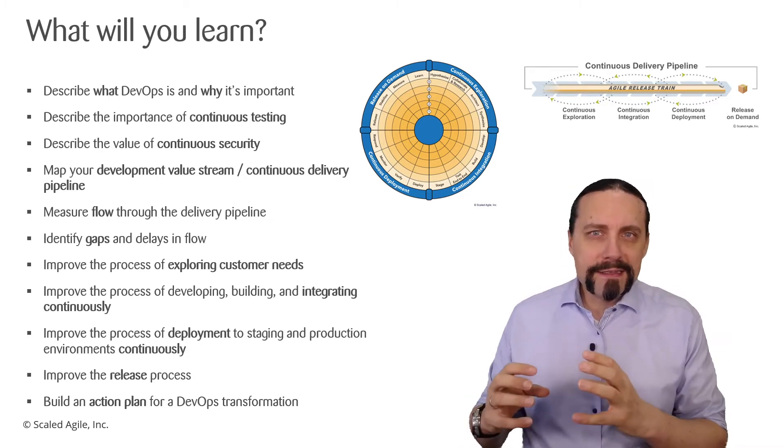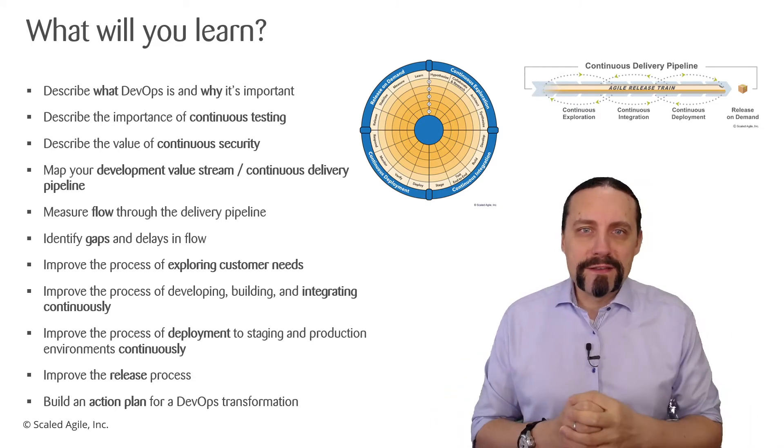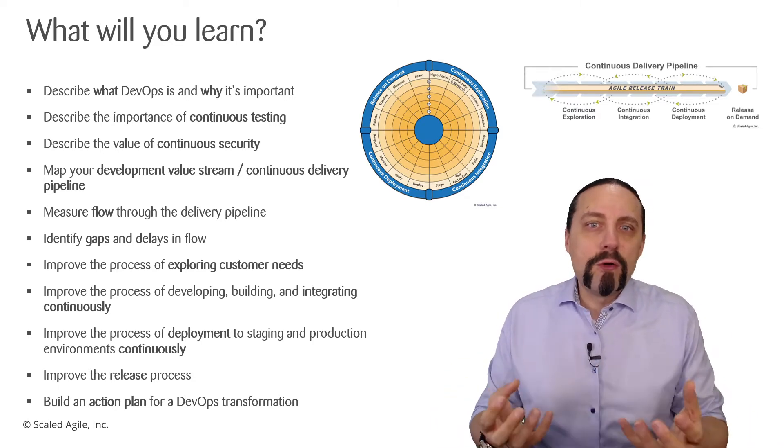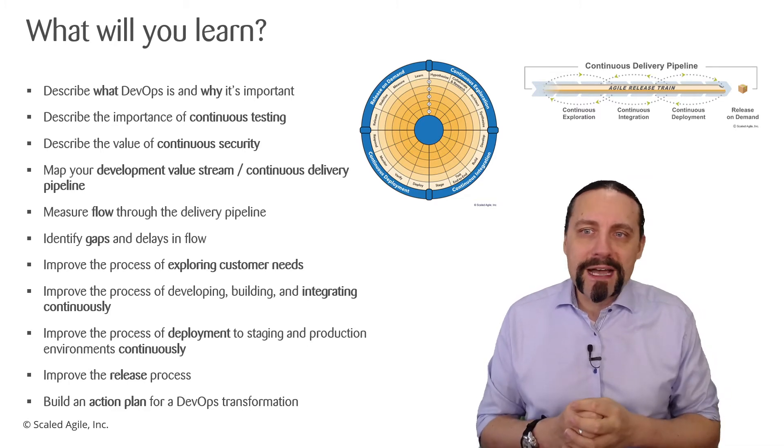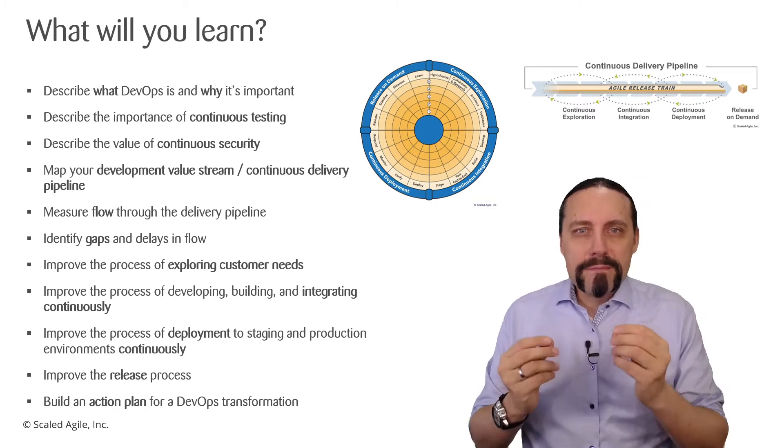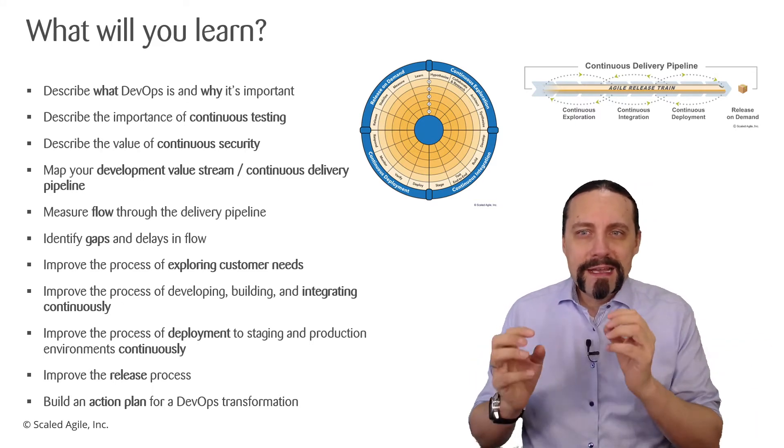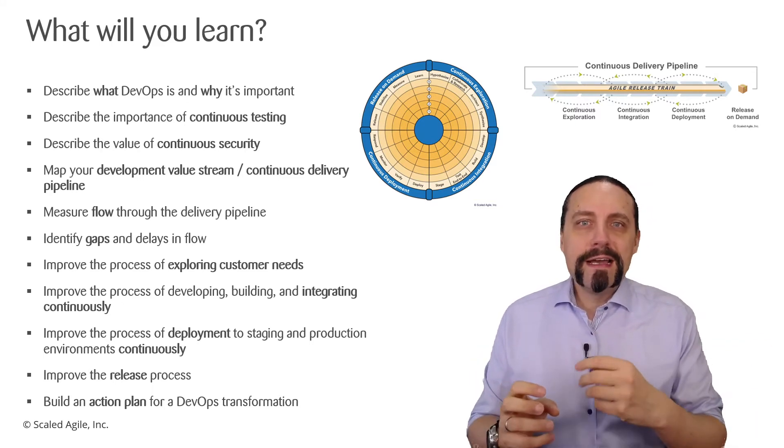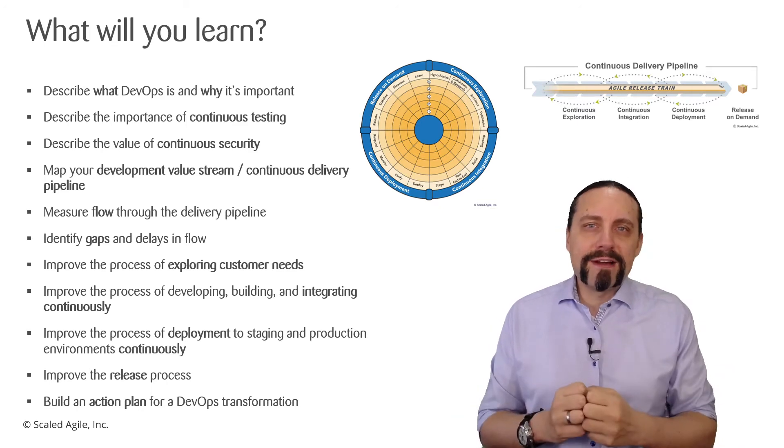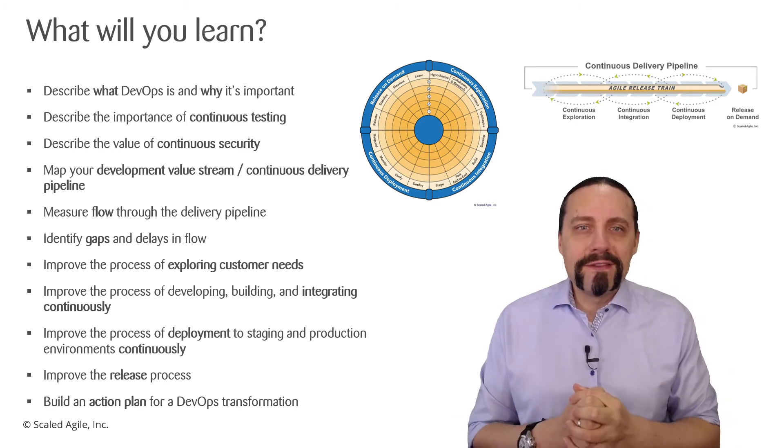As I said we will map the current value stream and the future value stream of their continuous delivery pipeline. And then we will measure the flow of ideas through this pipeline and identify together bottlenecks and work on these bottlenecks and derive out of that the future value stream.